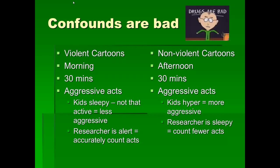Confounds are bad. Here's why. Let's say we set up violent cartoons in the morning, then observe the students for 30 minutes and count aggressive acts. Hypothetically, in the morning the kids are sleepy — they haven't really gotten up yet, so they're not going to be that active, and therefore not that aggressive. That may artificially depress the amount of aggressive acts in the morning, which would show up just among the violent cartoons group. So we may see equal levels of aggressiveness, not because violent cartoons have no effect, but because of this confounded extraneous variable.